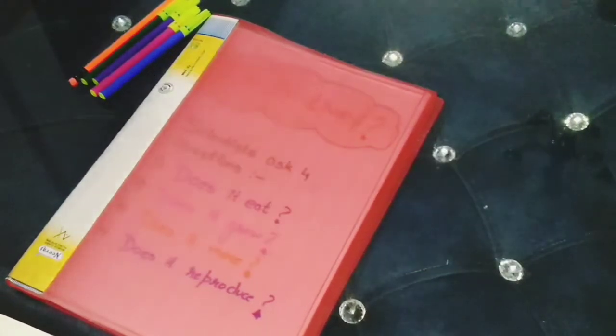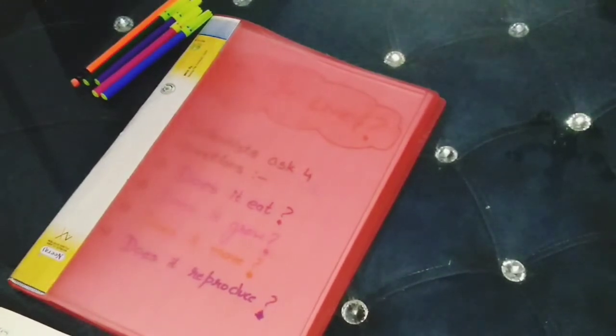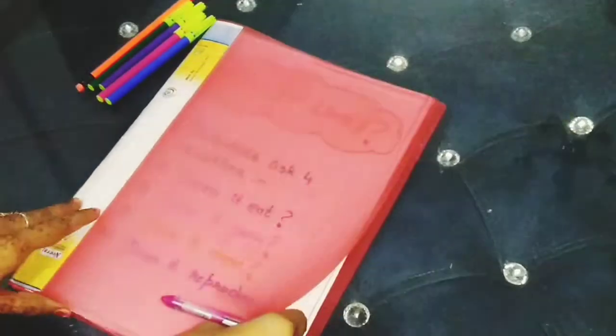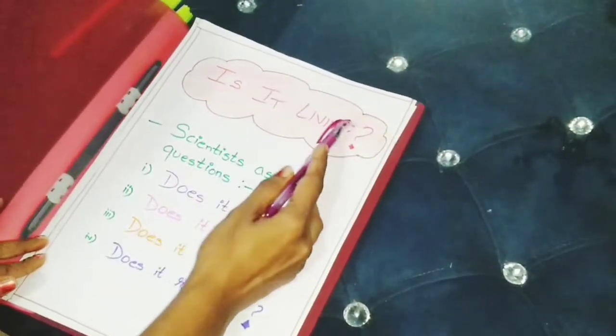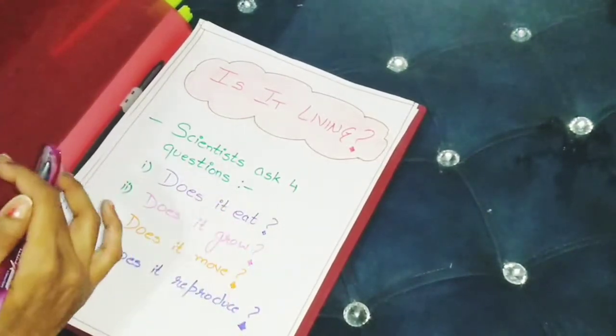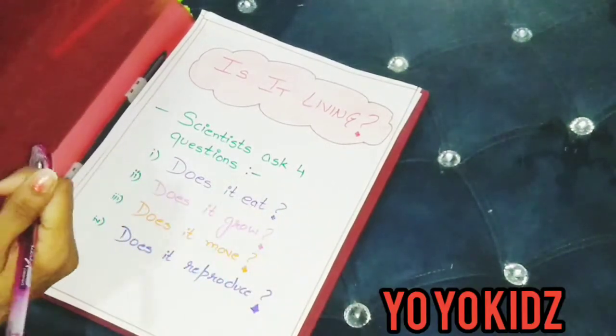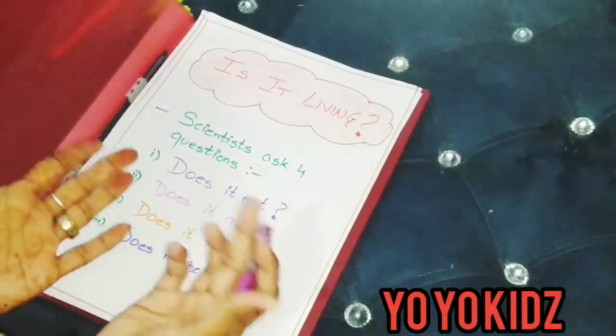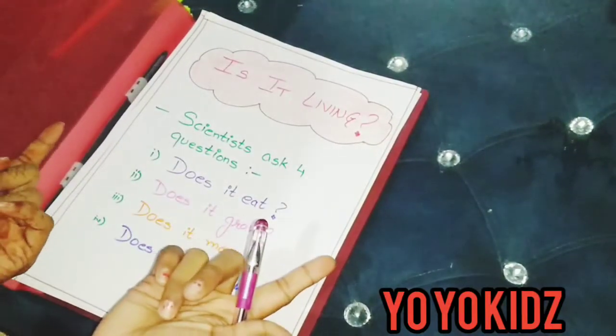Living things have some characteristics that non-living things do not have. Let's check it. Is it living? If we are given something, how will we tell if it's living or non-living? So here are some questions. You ask yourself these questions. If the answers to these questions are yes, then it is a living thing. And if the answer is no, then it's a non-living thing.